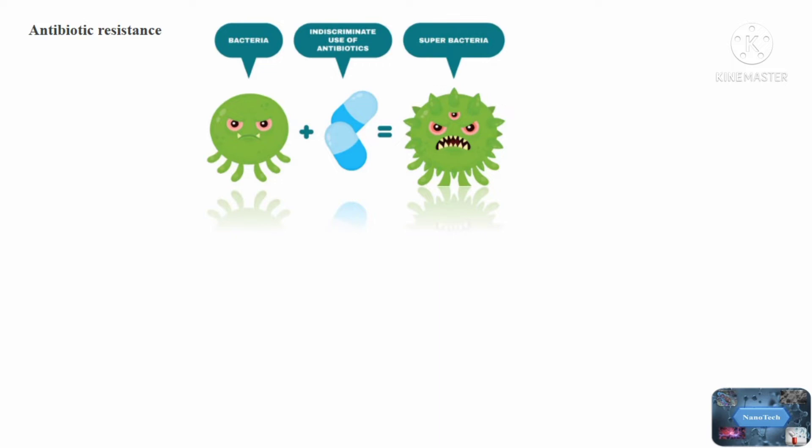What is Antibiotic Resistance? Antibiotic resistance is currently one of the most significant challenges to world health, food security, and development. Antibiotic resistance occurs when bacteria, viruses, fungi, and parasites evolve over time and lose their ability to respond to antibiotics, making infections more difficult to cure and raising the risk of disease transmission, severe illness, and death.